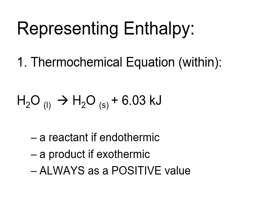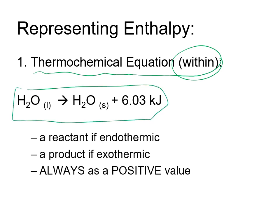The first one, and often how enthalpy is used, is within a thermochemical equation. Within the equation is probably not as common as the next approach, but it's basically treating energy as if it were a reactant or a product. If it's producing energy, it's going to show up on the product side, as if doing the transformation is what releases the energy.